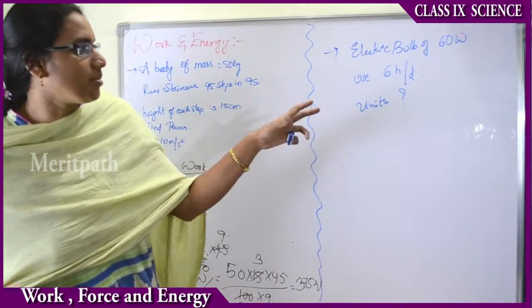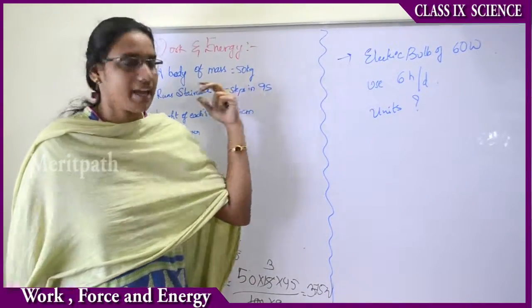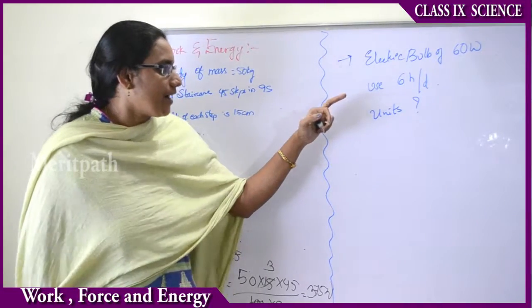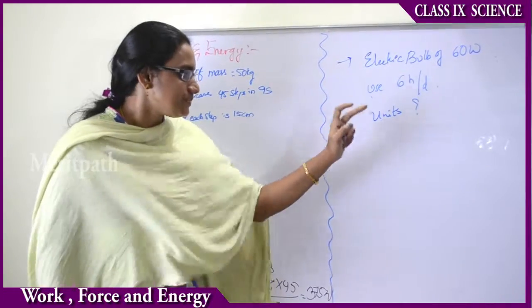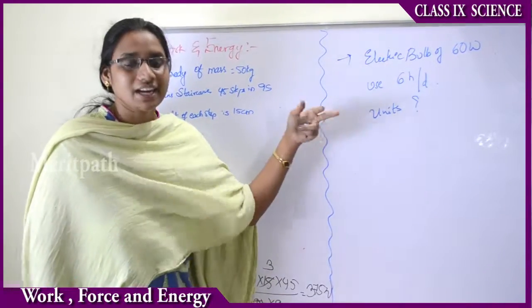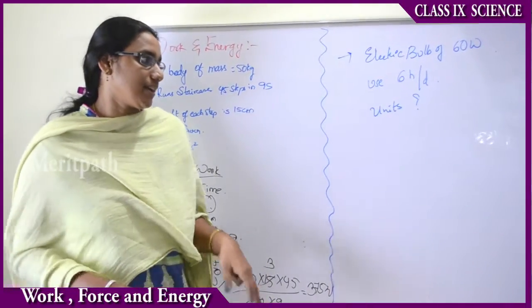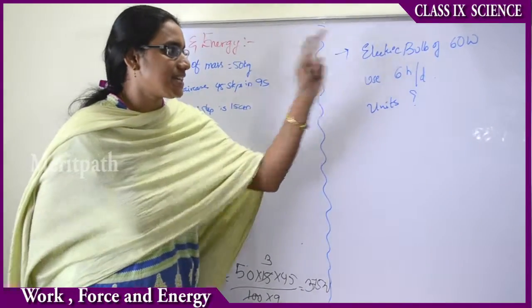Now let us see another problem. For example, let us take a house consisting of an electric bulb of 60 watts and the usage is 6 hours per day. What are the units that are consumed by the bulb of 60 watts? We will be calculating as shown, that is 6 hours per day at 60 watts.